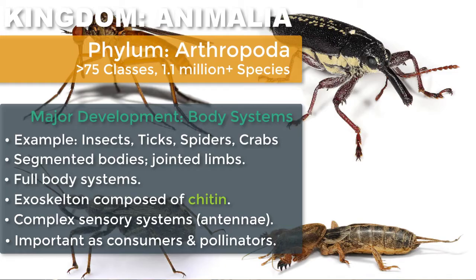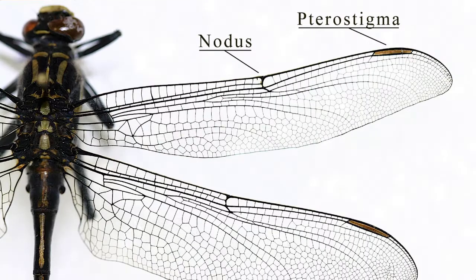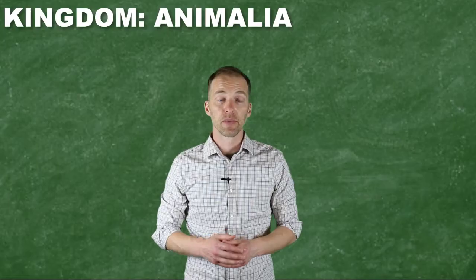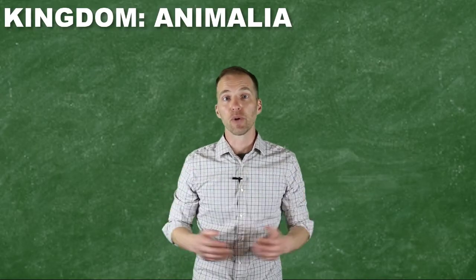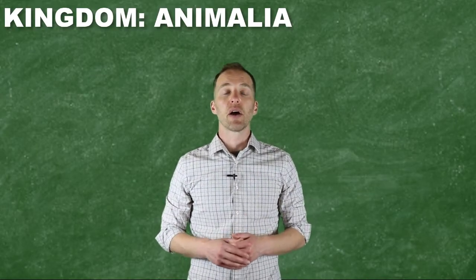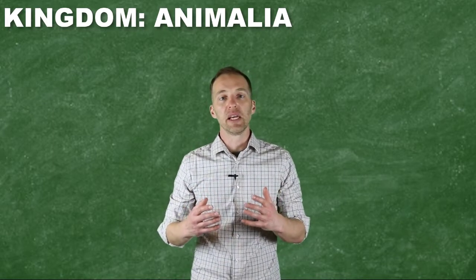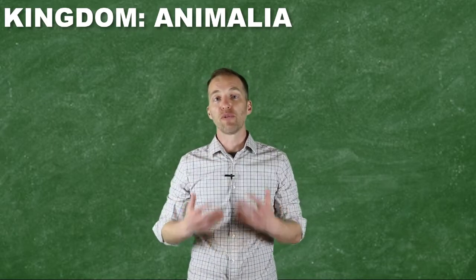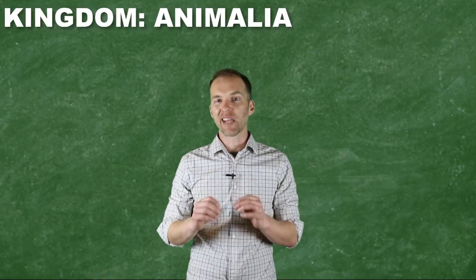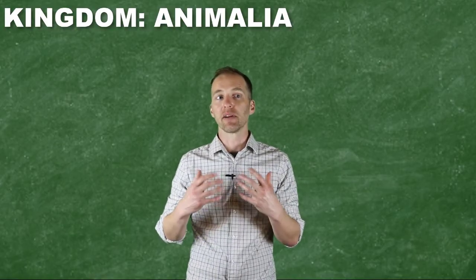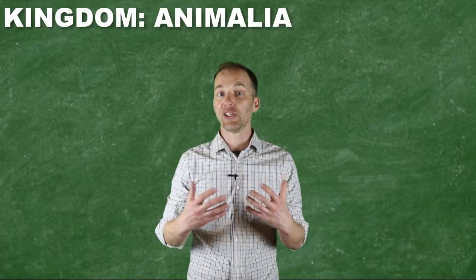Speaking of subgroups, insects are a class within the arthropod phylum, and are identifiable because at some point during their development they have or possess wings. As such, these are the only invertebrates that are capable of flight. The next and final couple of groups of organisms we're going to look at are classified as deuterostomes — that is, the opening that ultimately forms the mouth develops second, after the opening that's ultimately going to be used for egestion.